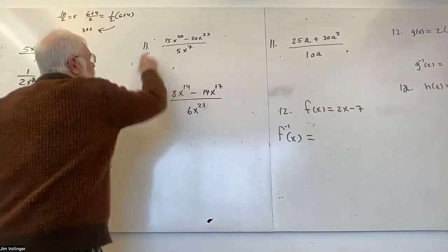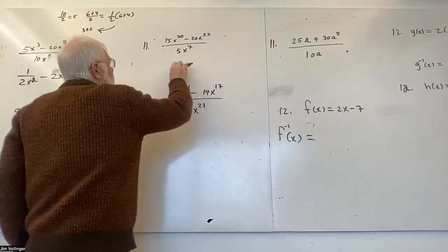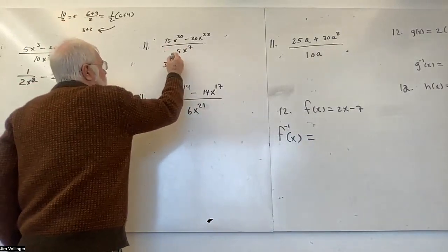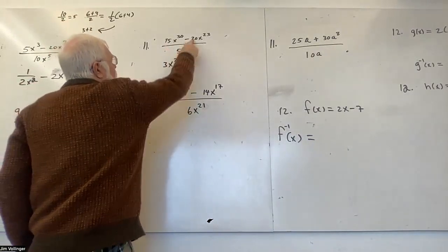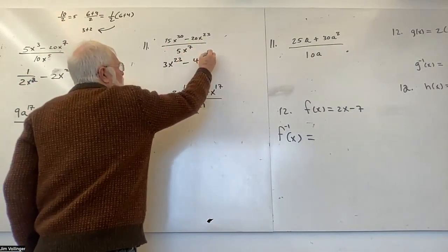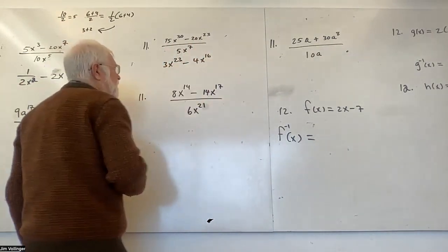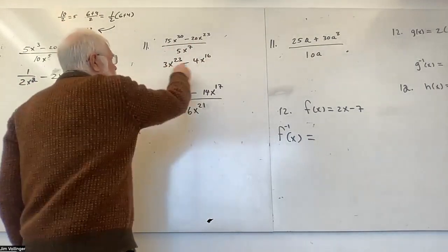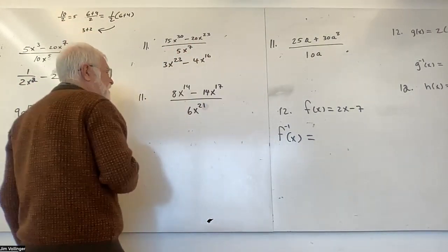Well, 5 goes into 15, 3, and x to the 23, 3x to the 23. 5 goes into 20, so we've got a minus 4, and it looks like 7 from 23 is 16. We're just counting. These are not alike, so we can't subtract them. These exponents are not the same, so those are not like terms.